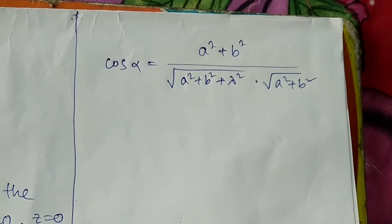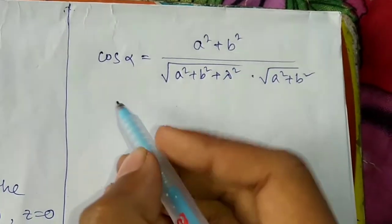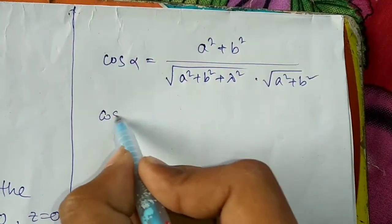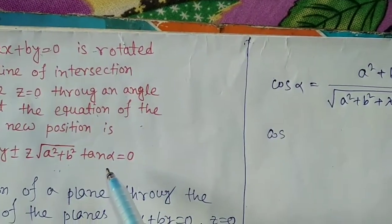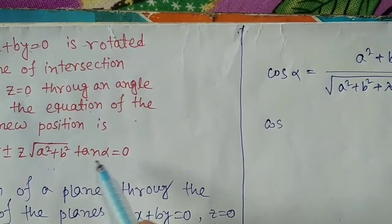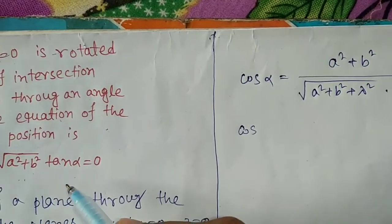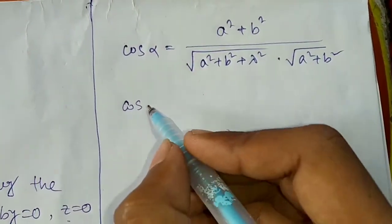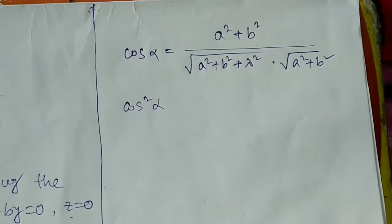We have to find the value of lambda. To convert cos alpha into tan alpha, we square both sides. After squaring, cos squared alpha equals to (a squared plus b squared) squared divided by (a squared plus b squared plus lambda squared) times (a squared plus b squared).